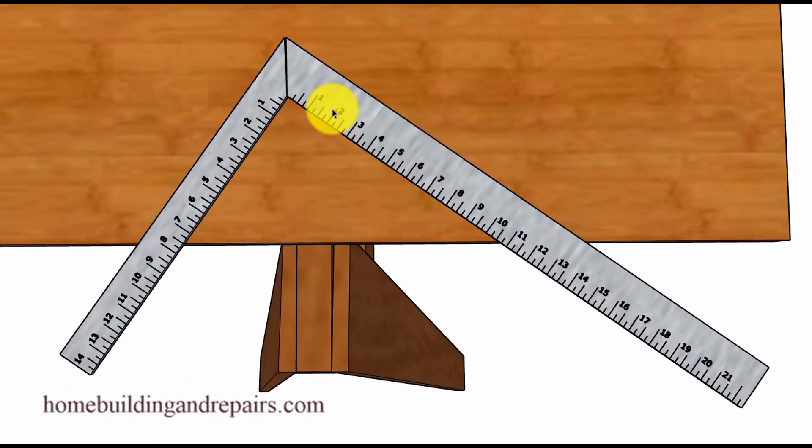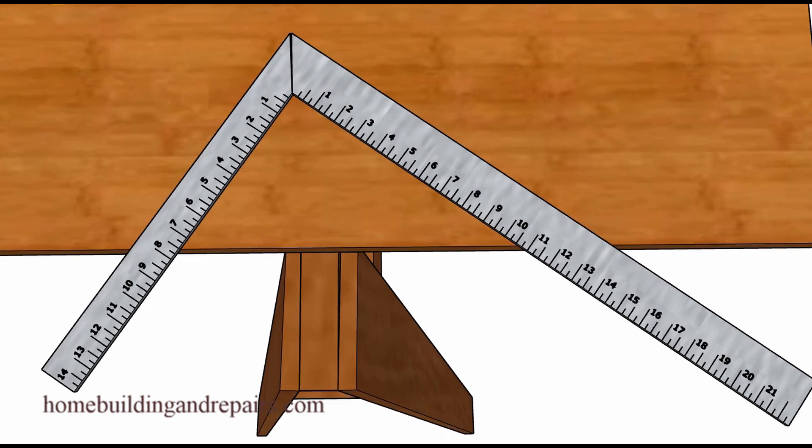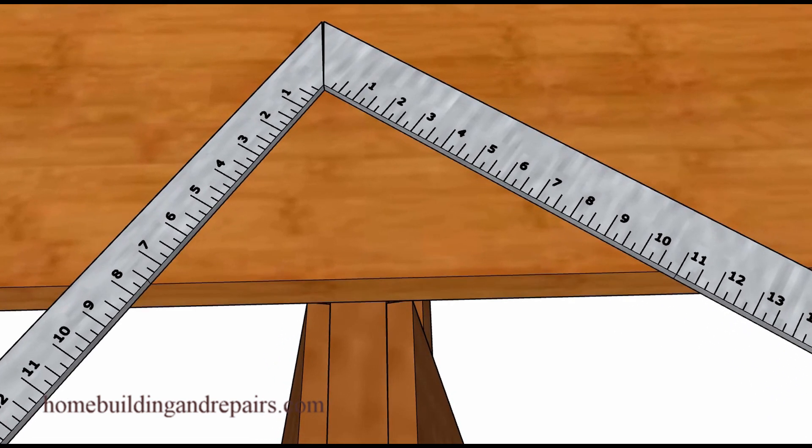So in our next example we're going to use the framing square that is bent inward. And as you guessed it, this will create a shorter stringer.